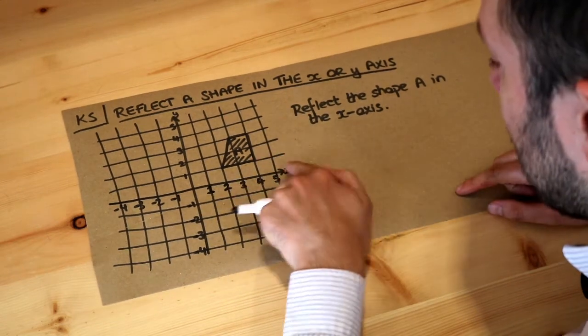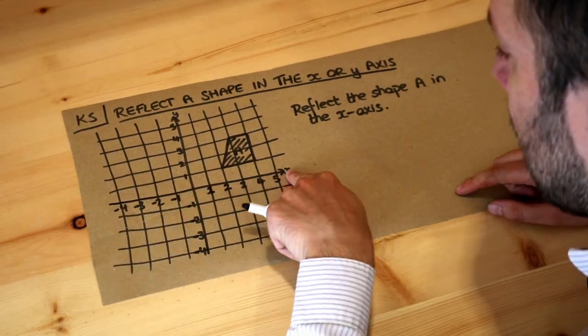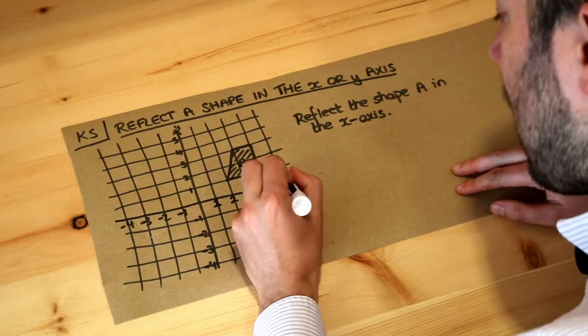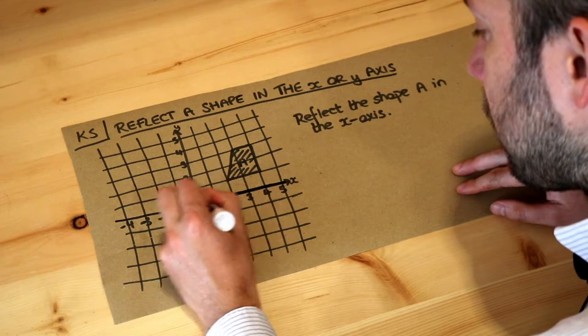Now remember the X axis is just this line labelled X and the Y axis is just this line here labelled Y. So we want to reflect the shape A in this line here. So if I just bold it up.